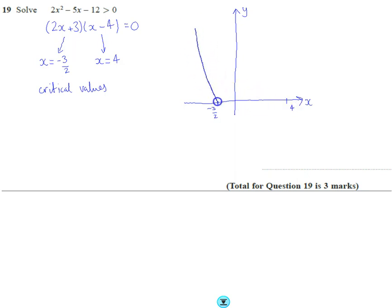Now what I'm going to do is draw my quadratic, and my quadratic is shaped something like that. As an aside, we know that this value here - looking at the minus 12 - we know the y-intercept is minus 12. We don't need that, we just need the critical values.